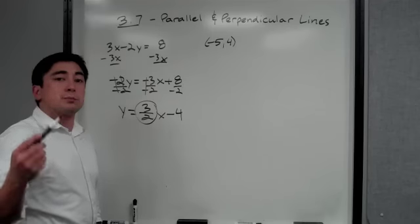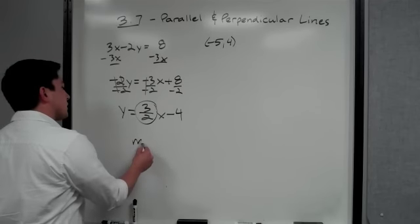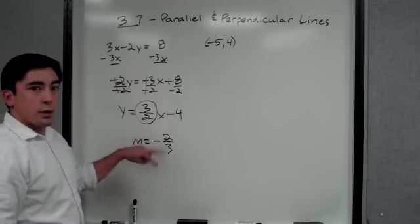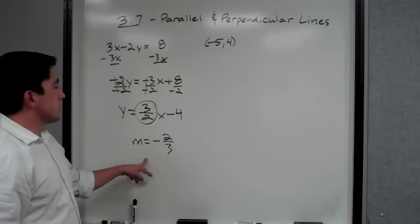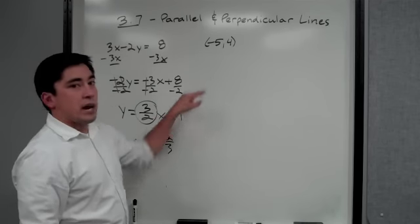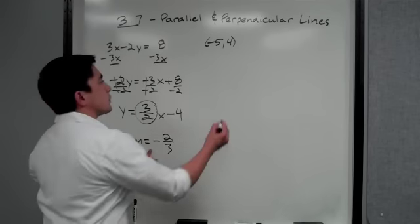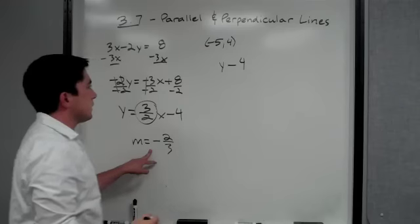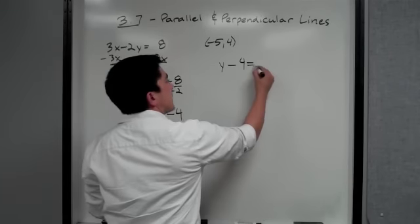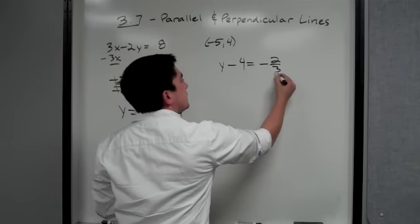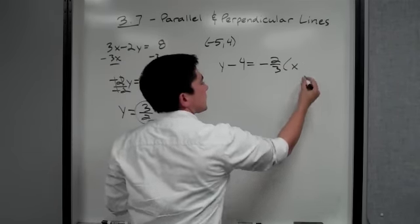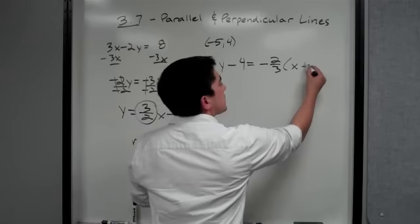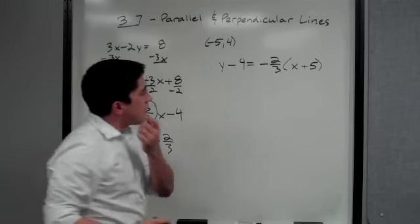The perpendicular slope is negative two-thirds — switch the symbol, flip the fraction. Now we have our point and our slope, so we plug into point-slope form: y minus 4 equals negative two-thirds times x minus negative five, which becomes x plus 5.